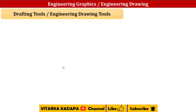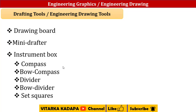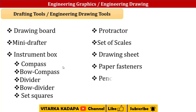Next, what are the various kinds of drafting tools available? I can simply term them as engineering drawing tools. Drawing requires basically a drawing board, a mini drafter, and various kinds of instrument boxes consisting of various instruments like compass, bow compass, divider, bow divider, set squares, protractor, set of scales, drawing sheets, paper fasteners, pencils, erasers and so on. These are the major requirements, though some other instruments are also available.